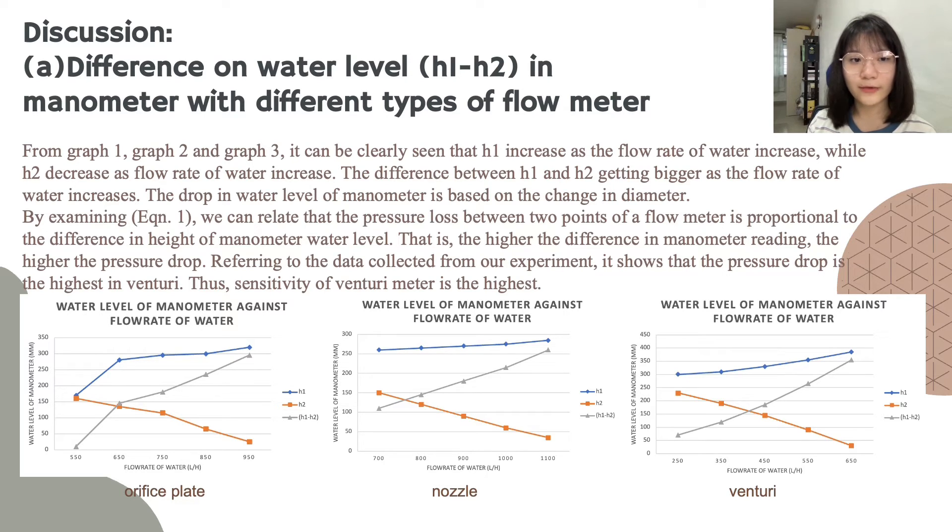By examining equation 1, we can relate that the pressure loss between two points of flow meter is proportional to the difference in height of manometer water level. That is, the higher the difference in manometer reading, the higher the pressure drop.